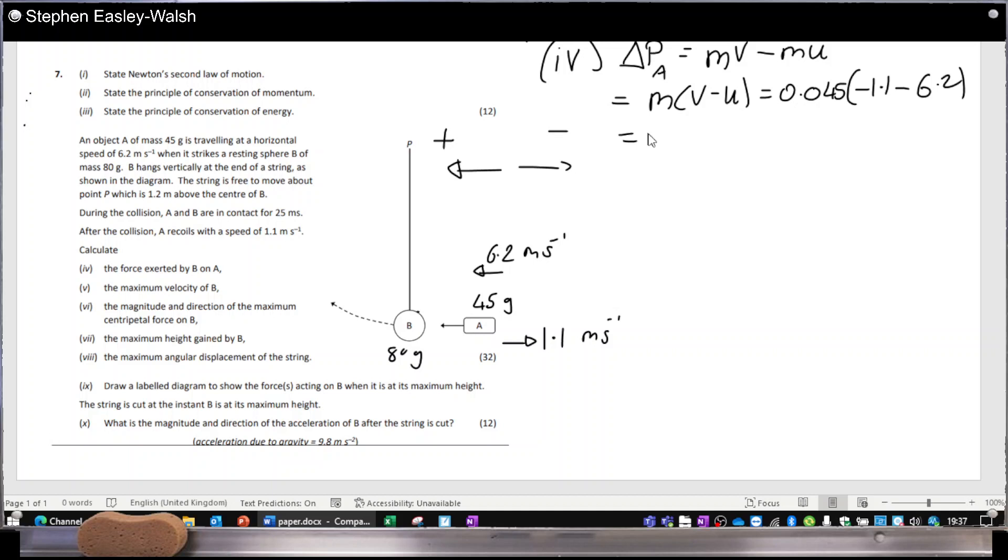So that will equal 0.045 times minus 1.1 minus 6.2. So that's minus 0.3285 kilogram meters per second. Now the force on B will be the change in momentum on B over its time. But because momentum is conserved, it means the change in momentum on B will just be equal and opposite that of A's. So if I just delete the minus and divide by 25 milliseconds, I'll have the answer as 13.14 newtons is what I got.